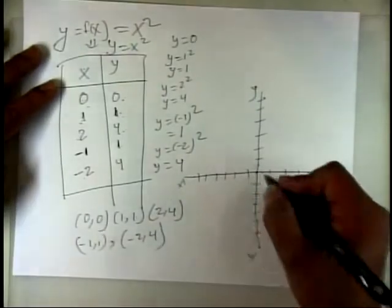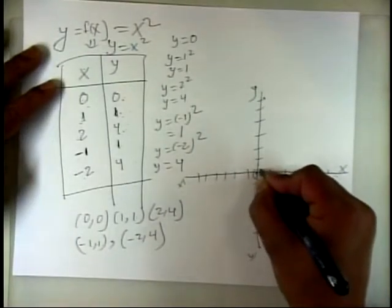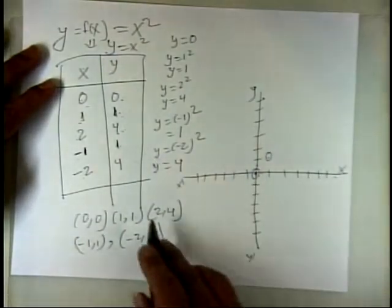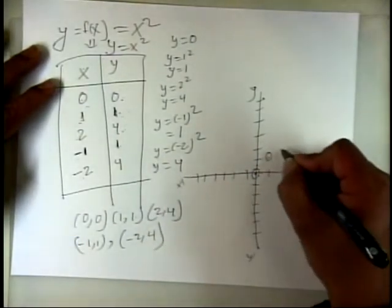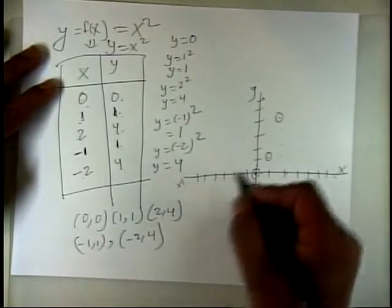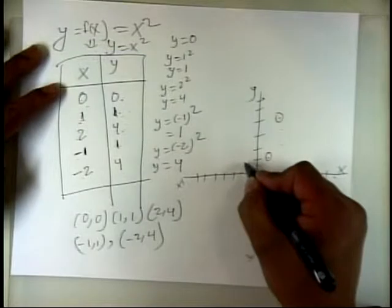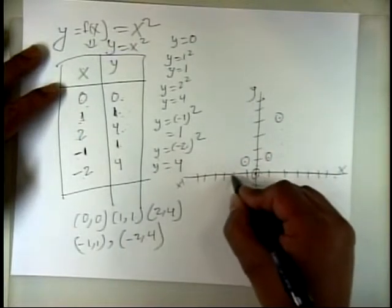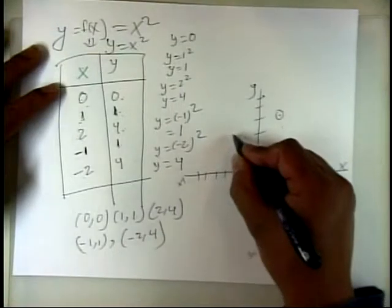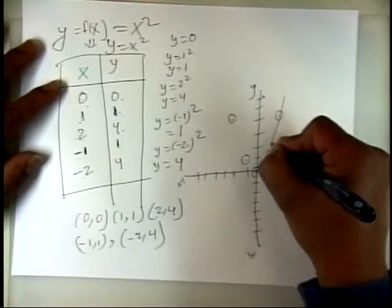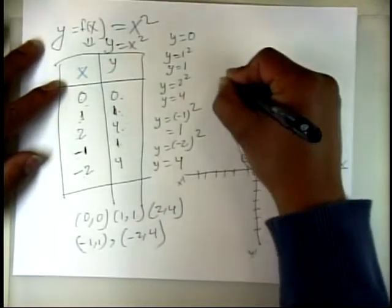Now for (0,0), we just put it here at the origin. (1,1) goes here. (2,4) - that's 2 on the x-axis and up to 4 on the y-axis. (-1,1) - that's negative 1 and 1 here. And (-2,4) - negative 2 and up to 4 here. And you just connect the points and you get a graph like this.